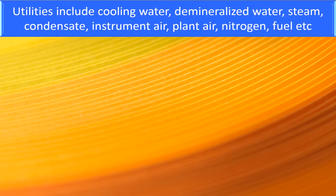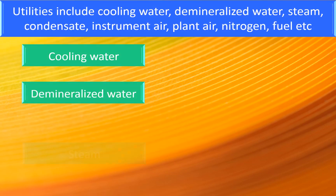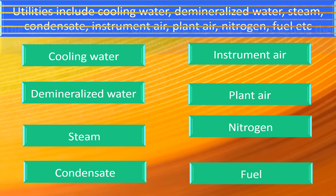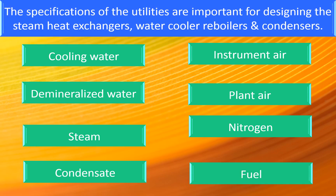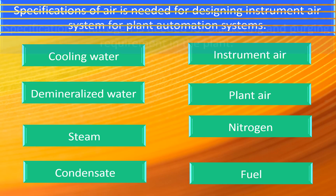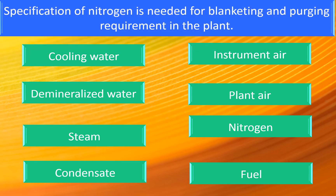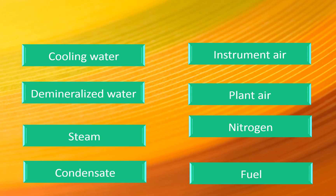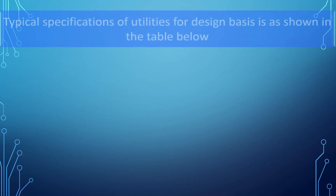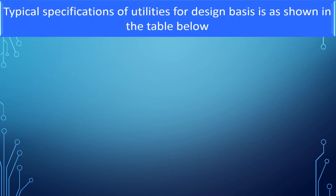Utilities include cooling water, demineralized water, steam, condensate, instrument air, plant air, nitrogen, fuel, etc. The specification of utilities is important for the design of steam heat exchangers, water coolers, re-boilers, and condensers. Specification of air is needed for designing the instrument air system for plant automation. Specification of nitrogen is needed for blanketing and pipe purging requirements. Typical specifications of utilities for the design basis are as shown in the table.